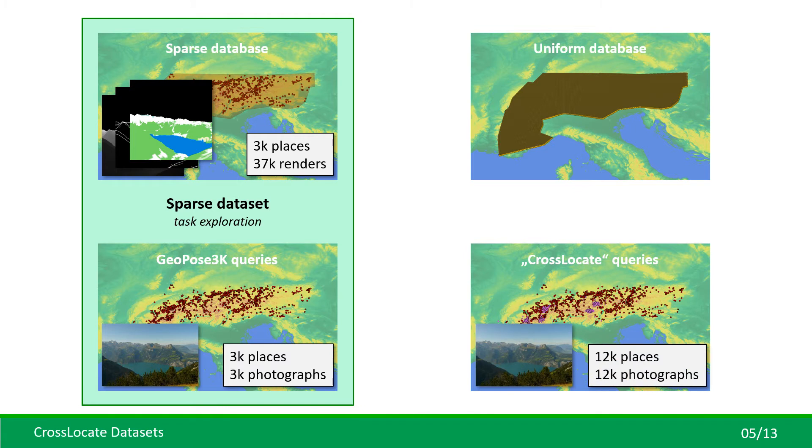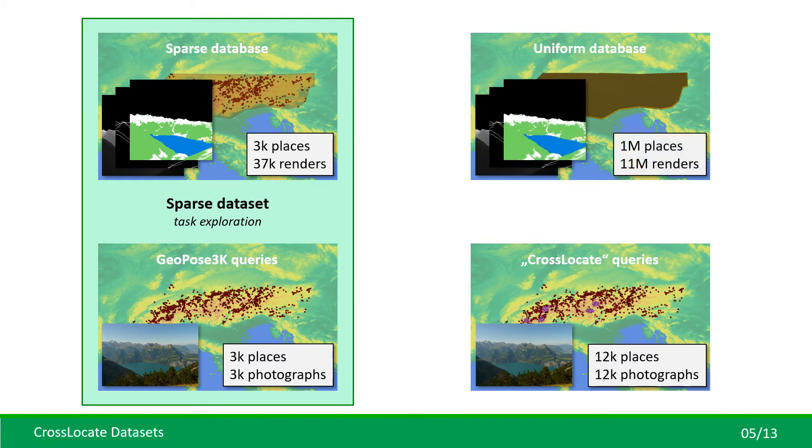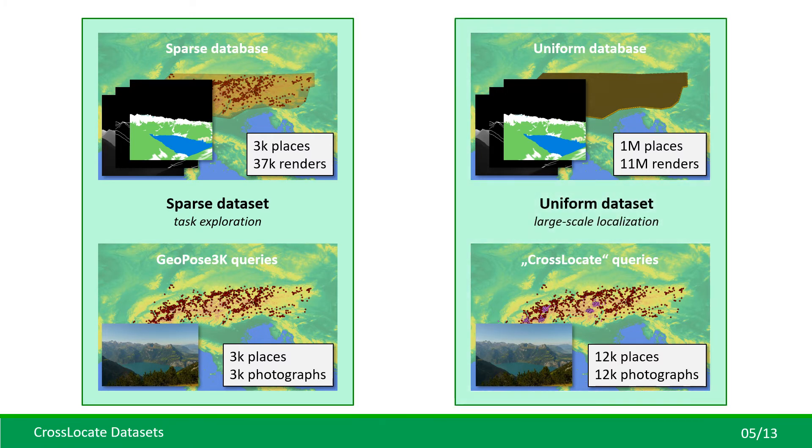The cross-socket query dataset contains 12,000 photographs from 12,000 places. It is paired with our uniform database containing 11 million rendered views from almost 1 million places uniformly distributed across the whole Alps. The uniform dataset then represents the real-world scenario of localization across hundreds of thousands of square kilometers and millions of images.